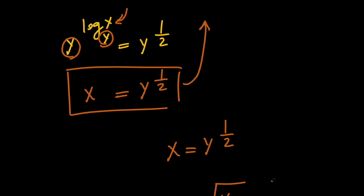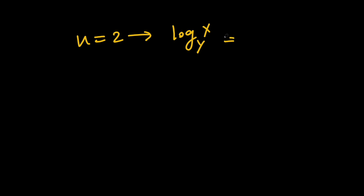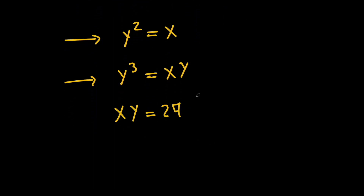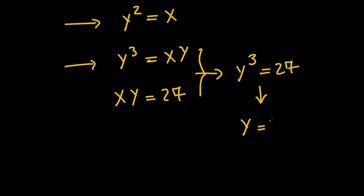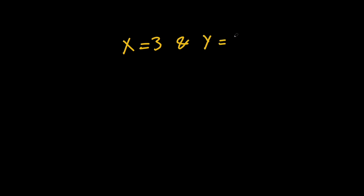In the second case, u equals 2, which means log x with base y equals 2, so y squared equals x. Multiplying both sides by y gives y cubed equals x times y, and since x times y equals 27, y cubed equals 27, meaning y equals 3 and x equals 9. So x equals 9 and y equals 3 is the second solution. We have two solutions: either x equals 3 and y equals 9, or x equals 9 and y equals 3.